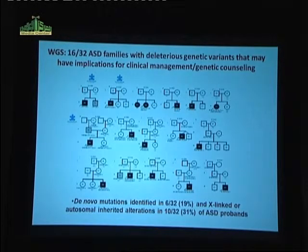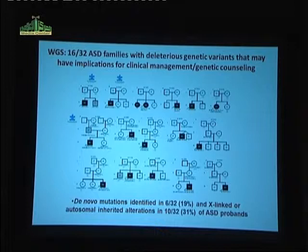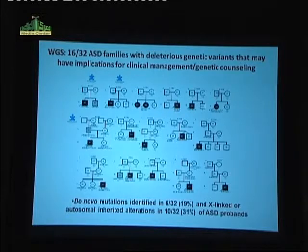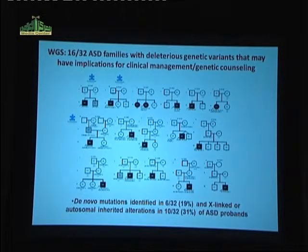Of these 32 families — I said 33 before, but we had spiked one family as a quality control — of 16 families we could identify de novo mutations in six in ASD or ASD candidate genes, and then inherited or X-linked autosomal alterations in 31%. So in half the families, we had something that met our criteria to convey information back to the families.